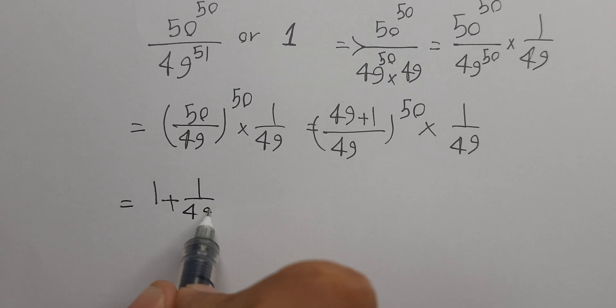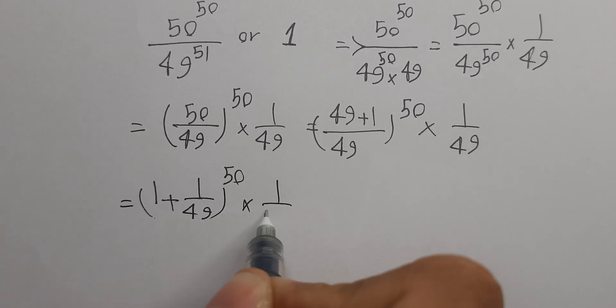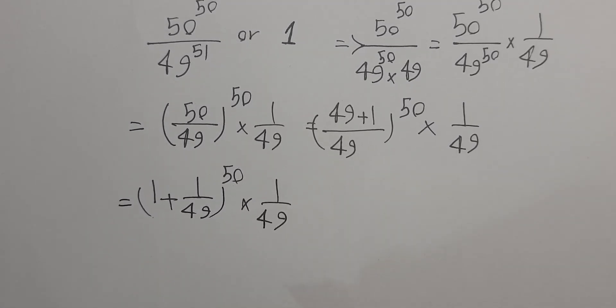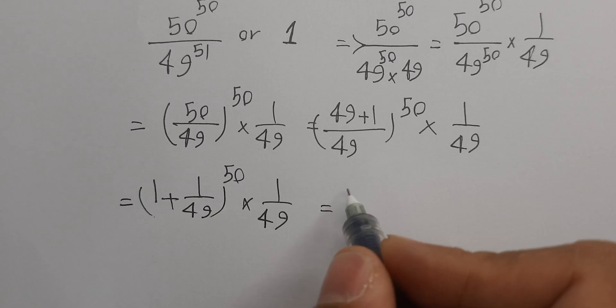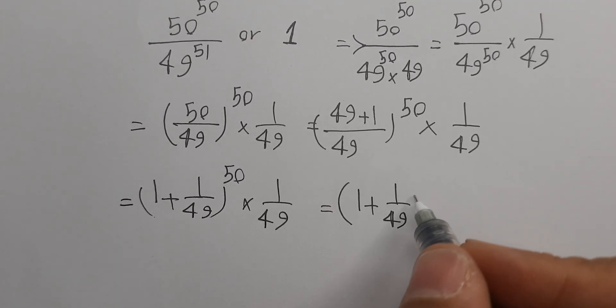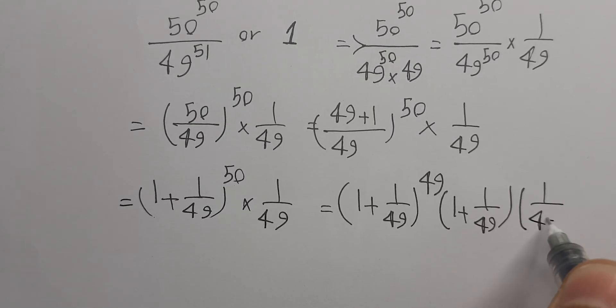This equals 1 plus 1 over 49 power 49 times 1 over 1 plus 1 over 49 power 49 times 1 over 1 plus 1 over 49 times 1 over 49.